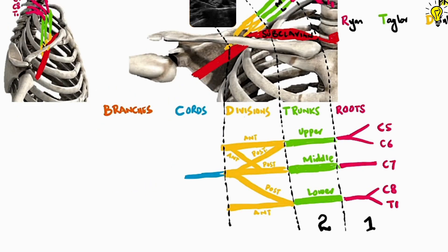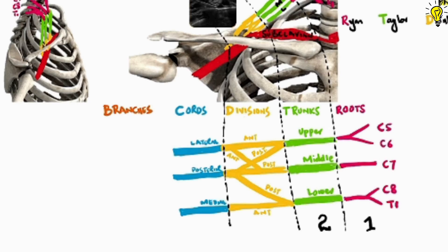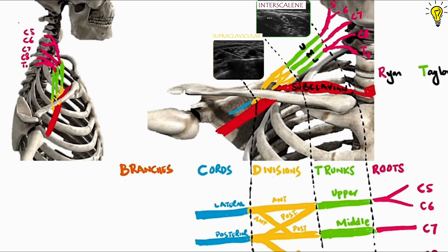So we have already discussed how cords are formed. But these cords are called lateral, medial and posterior to what structure? You guessed right, the subclavian artery. As can be seen, lateral cord going lateral to the artery, posterior cord posteriorly and medial cord running medial to the artery.